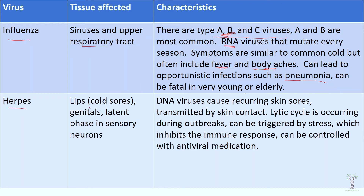Herpes can cause cold sores and genital herpes and it has a latent phase. Herpes infects the skin, and when the virus is in its latent phase it is actually inside sensory neurons. Chicken pox is also a herpes virus in the same family — it can do the same thing and stay in the sensory neurons. It can be reactivated if someone has a low immune response or high levels of stress, which inhibits the immune system. People who have had chicken pox in the past can sometimes have a recurring infection called shingles.